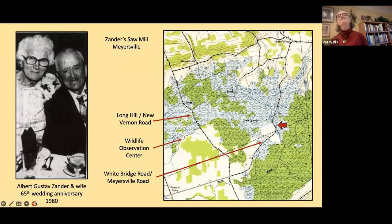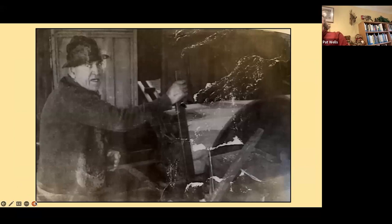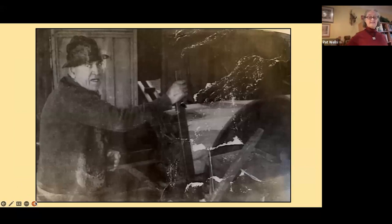The last sawmill in or around the Great Swamp was owned by the Zander family, located on a section of Myersville Road that no longer exists — now just a path through the wilderness section. Two generations of Zanders ran it, first as a water mill and later as a steam-driven mill. The Zanders sold the land to the Great Swamp in 1968, just as that area was becoming a designated wilderness.